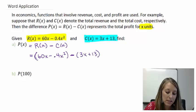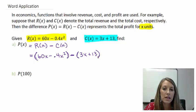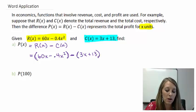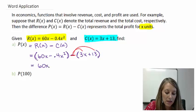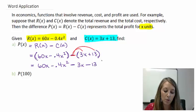Notice again, I substituted these functions in parenthesis, which is absolutely necessary here, because this subtraction goes to both parts there. So, this gives me 60X minus 0.4X squared minus 3X minus 13, since we distributed that negative to both parts there.